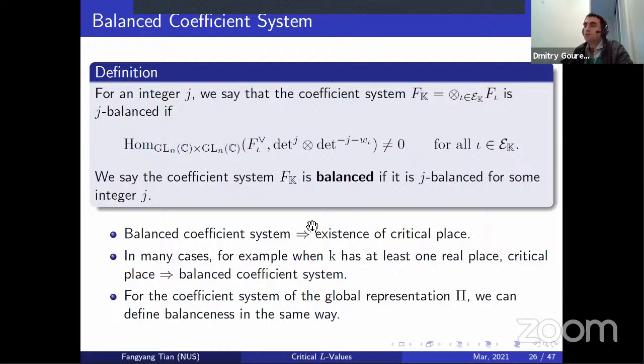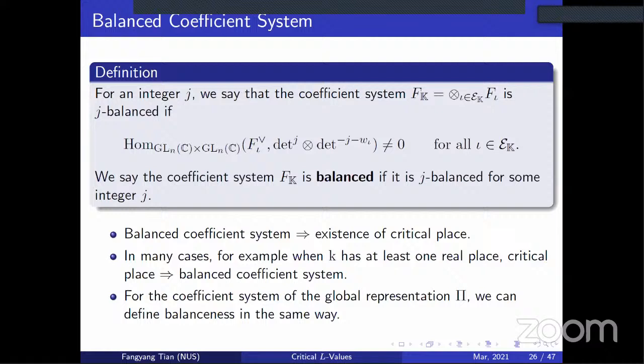Question: What does symplectic type mean? Answer: Symplectic type means that the image of the local L-parameter lies in GSp(2n), or more precisely a conjugate of GSp(2n).